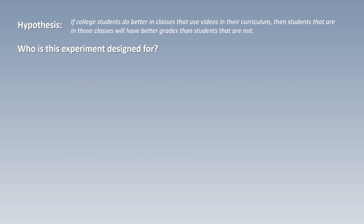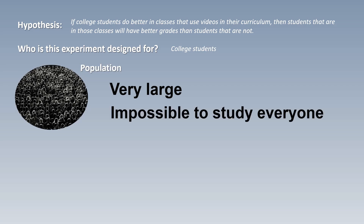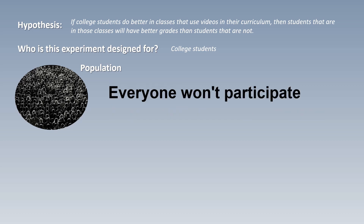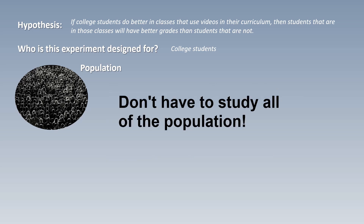The people that are going to benefit from this would be college students. Another way of saying this is that college students are my target population. A population is by its very definition very large, which means you can't really study all of a population. There are tens of millions of college students just in the United States, so there's no way to get tens of millions of people to participate — and even if you could, it would be really expensive and time consuming.